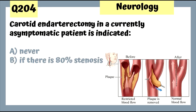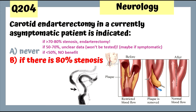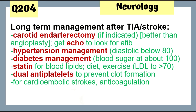Question 204: Carotid endarterectomy in a completely asymptomatic patient — is it indicated never, or if there's 80% stenosis? The answer is if there's 80% stenosis this procedure can be done; some say the number is 70%. Below 50% there's never a benefit; between 50 and 70 data is unclear. Long-term management after TIA or stroke includes carotid endarterectomy, echo to look for AFib, managing hypertension and diabetes, statins for all patients, dual antiplatelets, and anticoagulation for cardioembolic strokes.